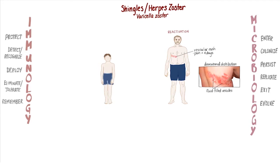Varicella zoster is a member of the herpes virus family, and it typically causes chicken pox in children and shingles in older adults. When Noah was six years old, he remembers that both he and his younger brother came down with chicken pox, a highly contagious disease caused by primary infection with the varicella virus.